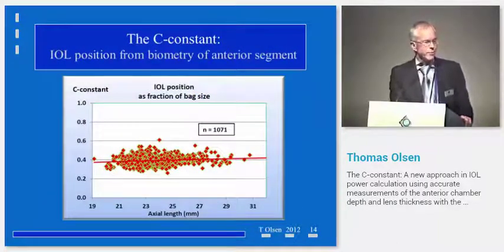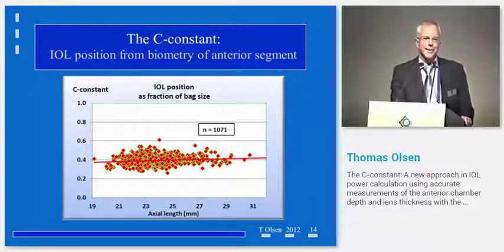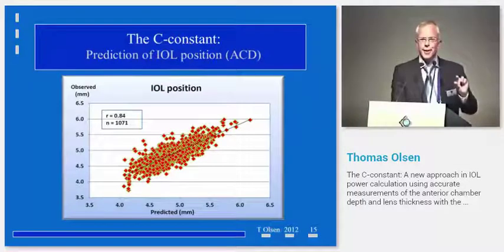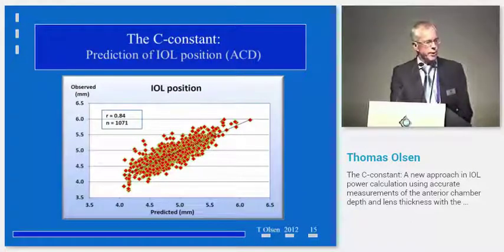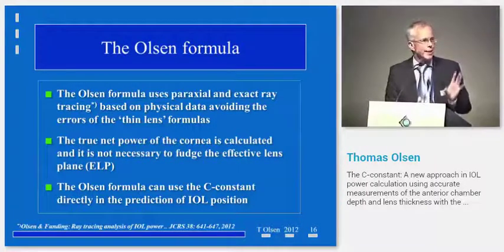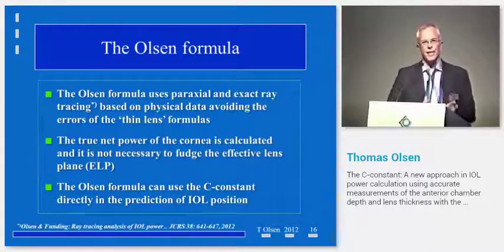Here you can see the C constant for a given IOL — this is an Acrysof type of IOL, and the C constant was about 0.4. Very importantly, the constant was a true constant over the axial length, so it was the same in the short eye and the same in the long eye. Because the spread was very tight, you can use the C constant to predict where the IOL ends up in the eye. However, this is of no use if you cannot use it in a formula. You cannot use thin lens formulas because they only operate with effective lens planes. So you need at least paraxial ray tracing or thick lens formulas, or even better, full ray tracing.